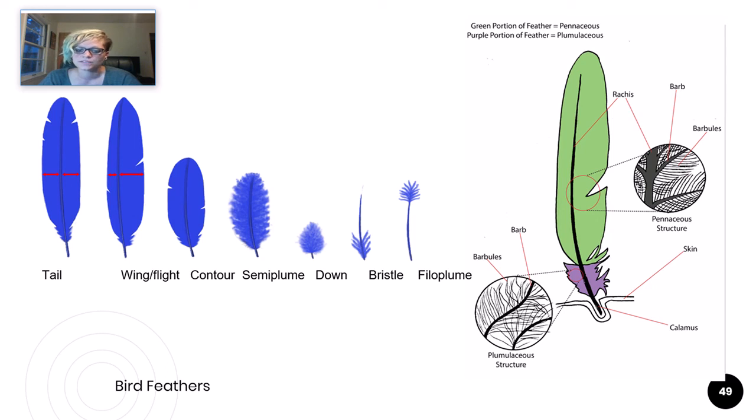Birds have to time molts carefully because making new feathers takes a lot of energy, and the loss of feathers can put them at a serious disadvantage. So whether or not an animal has feather, hair, or scales, they all use these integumentary organs to help them sense the world around them.